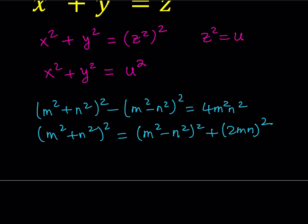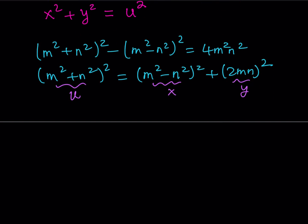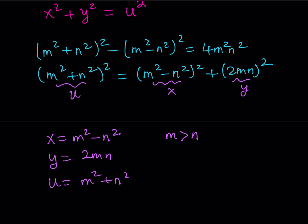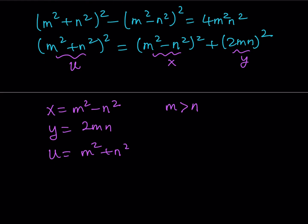We can safely say that x equals m squared minus n squared, y equals 2mn, and u equals m squared plus n squared. We want these to be positive integers, so I'll assume m is greater than n — both positive integers. This gives us a solution in two parameters m and n for the Pythagorean equation. But our goal is to solve for x, y, z, not x, y, u. We need to find z, and remember that u equals z squared.